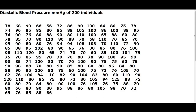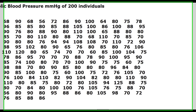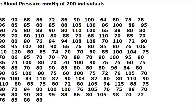We are going to make a histogram of this data, which shows diastolic blood pressures of 200 individuals in millimeters of mercury. The data set is pretty large, so it will be good to organize it in a way different than organizing it in a stem plot.